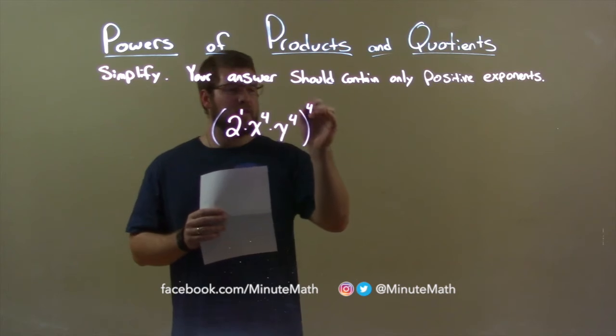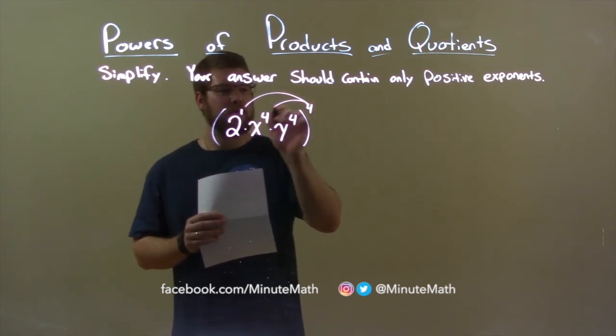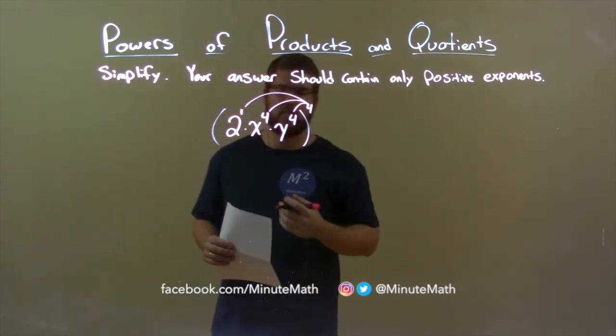we take from the outside the fourth power and multiply, distribute it to all parts, all exponents inside the parentheses.